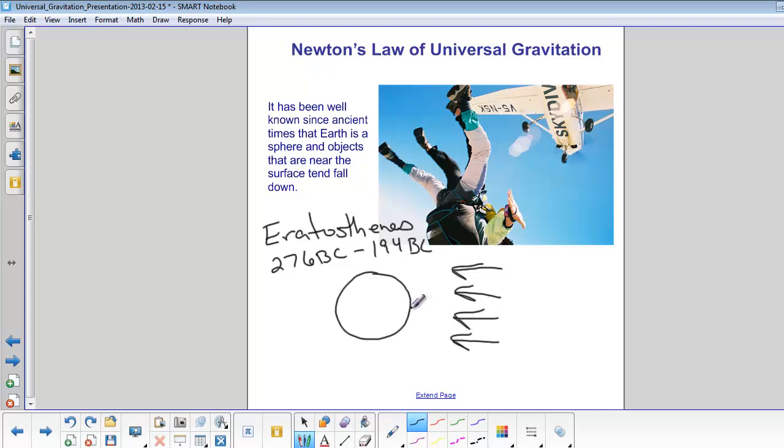So if you have a building right here on the surface of the Earth, at a certain time of day, a certain day of the year, it won't cast a shadow. But at the very same moment, maybe a building over here somewhere would cast a shadow.